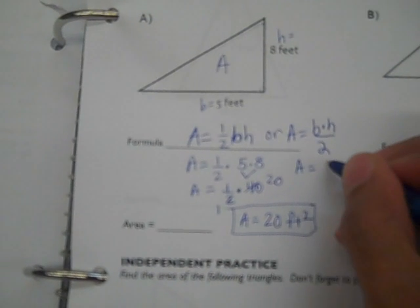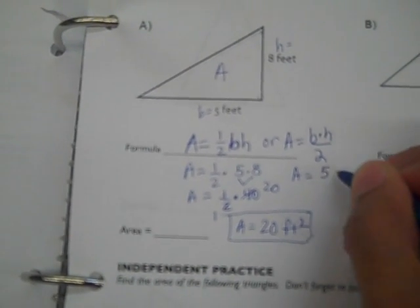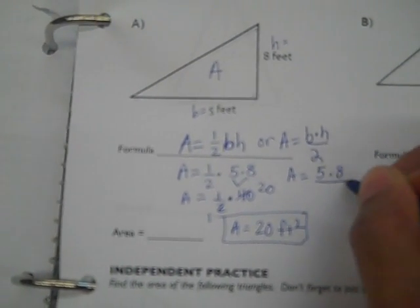If you wanted to use this formula right here, the area equals base times height divided by two. Base is five, height is eight, and divide that by two.